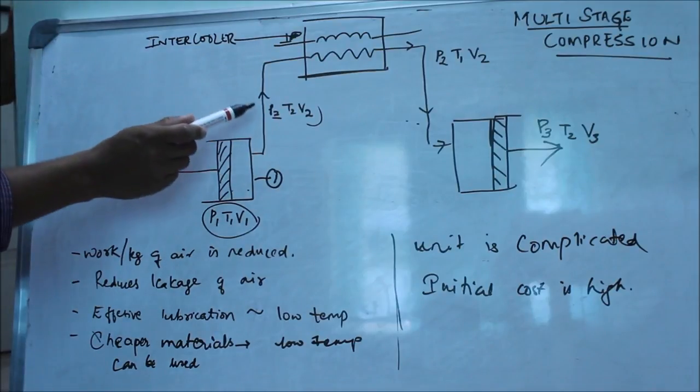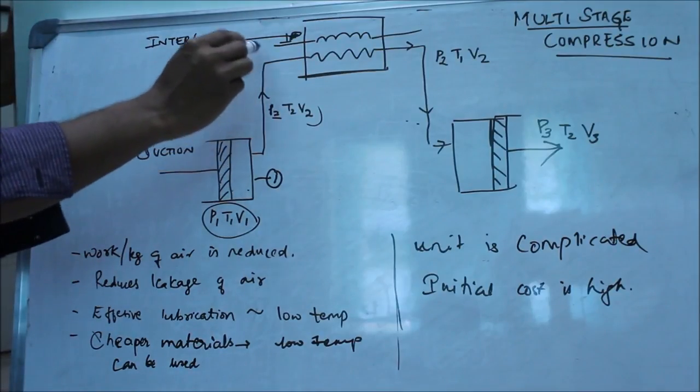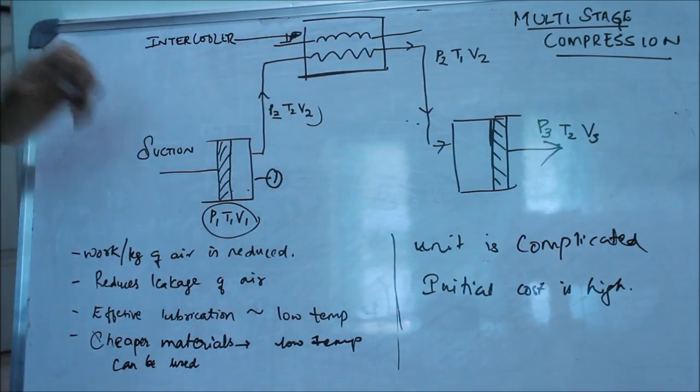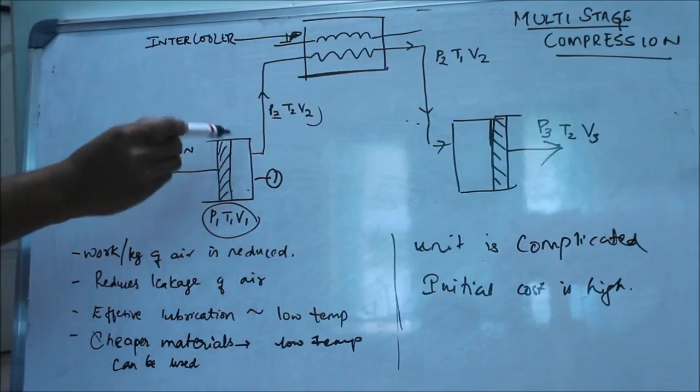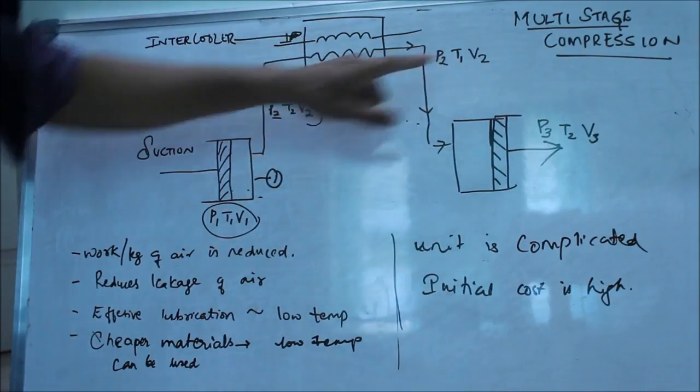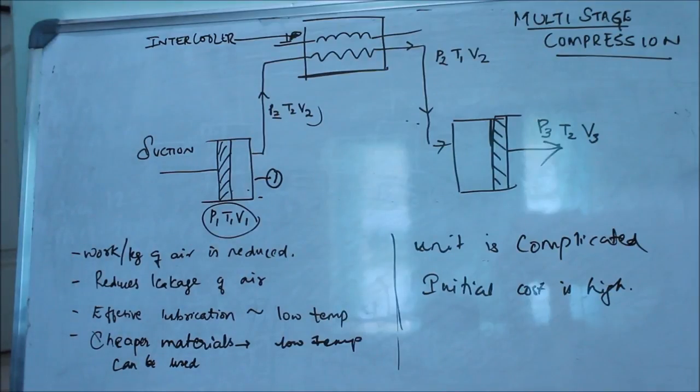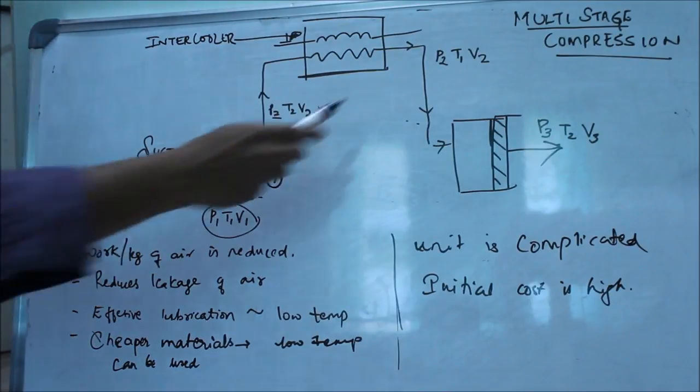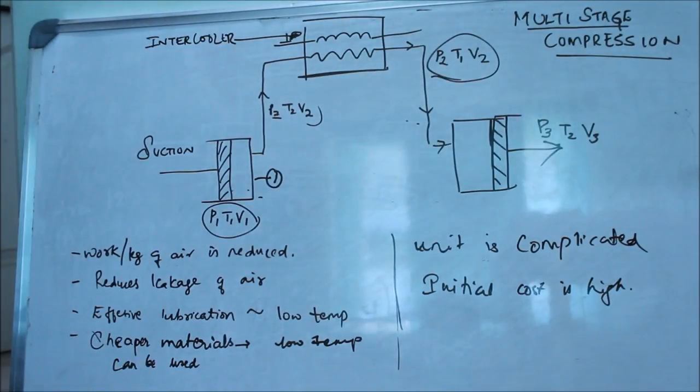What we do next is we pass this compressed air through an intercooler where the pressure and volume remain the same, but the temperature gets reduced back to the initial temperature. So it comes out as P2, T1, and V2.